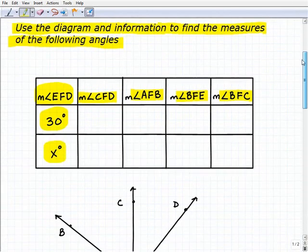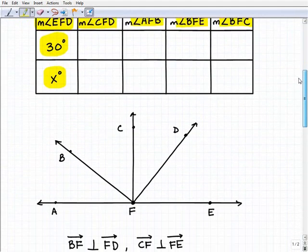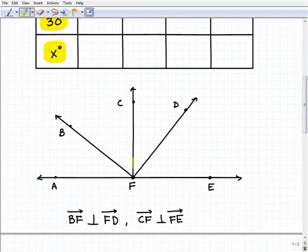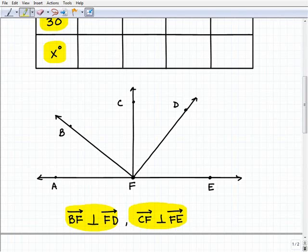Let's take a look at our diagram here. Take note that we're given another piece of vital information. We have two sets, two pairs of rays that are perpendicular to one another. And that's really important. So BF, ray BF is perpendicular to FD. So ray BF is perpendicular to FD. Therefore, this total angle is 90 degrees.